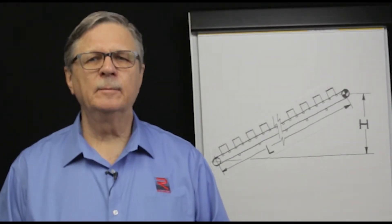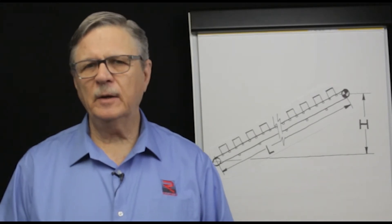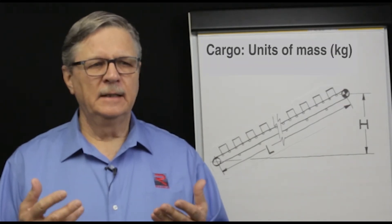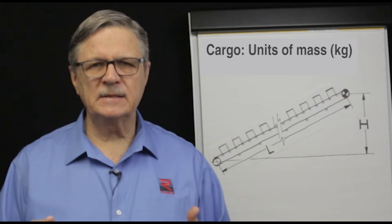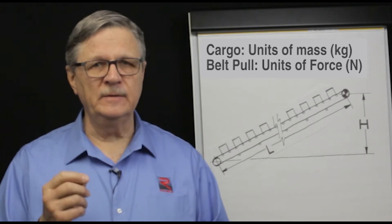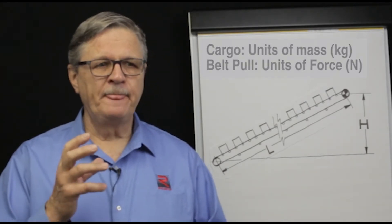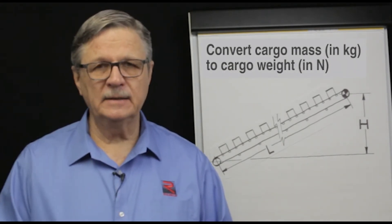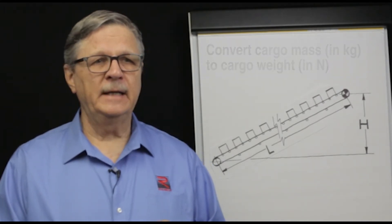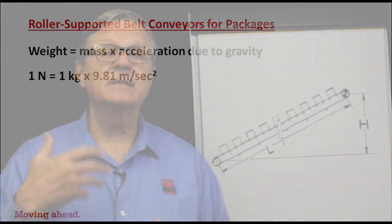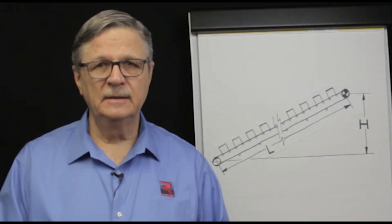Here's an important point to remember when calculating required belt power using metric units. Typically, cargo is specified in units of mass, for example kilograms. However, belt pull needs to be specified in terms of newtons. So it's essential to convert cargo mass into cargo weight measured at the Earth's surface. We know that 1 newton equals 1 kilogram times 9.81 meters per second squared — that's how we convert units of mass to units of weight.